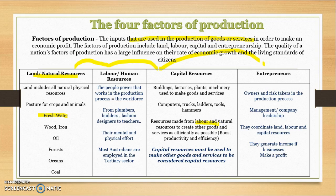For something to be classified as a capital resource, it must be used to make other goods and services. A hammer at home that you're not making goods and services with to sell is not a capital resource. A capital resource is only a capital resource if it's being used to make further goods and services. If that hammer is being used to make something you'll sell for profit, then it's a capital resource. Cars are not a capital resource if you're just using them to get around, but if you're using them to sell pizzas or for delivery, then they are a capital resource.